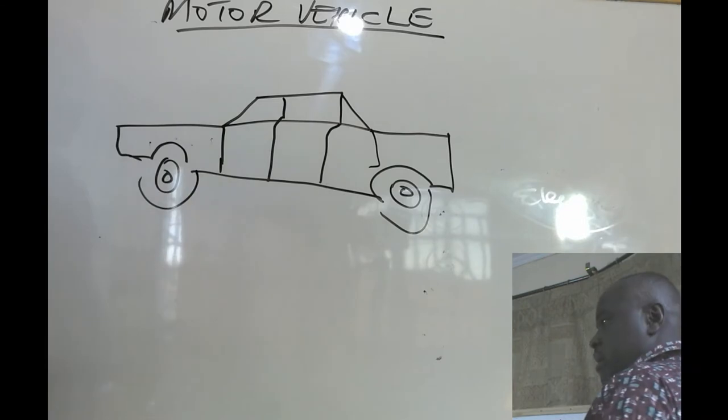This is called the body. The body is the one that holds everything that is found in a car. It holds the seats, it holds the engine, it holds the gearbox, it holds the wheels and once you drive the car all these things come into motion and the car starts moving.